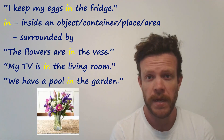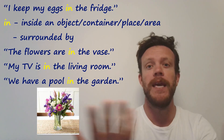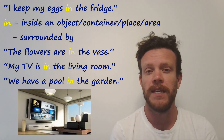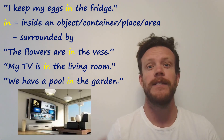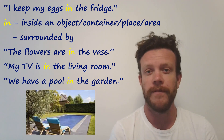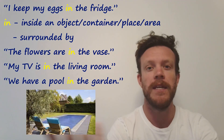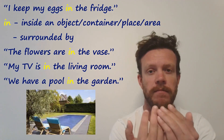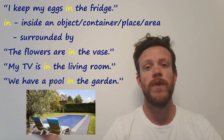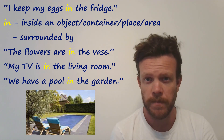A little more confusing is when something isn't fully enclosed inside, but is surrounded by something — and we still use the preposition 'in.' For example, the flowers are in the vase, the TV is in the living room, and we have a swimming pool in the garden. Inside or surrounded by, we use 'in.'